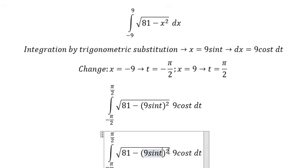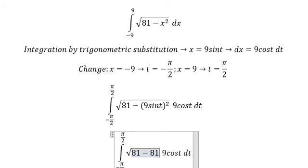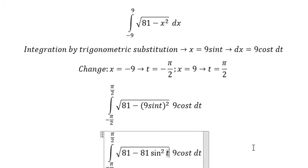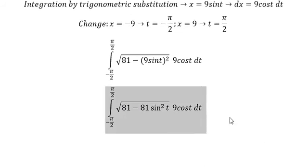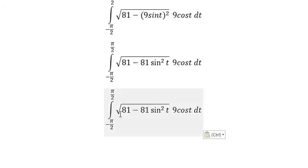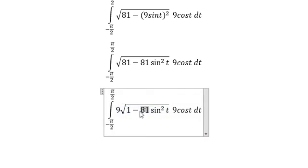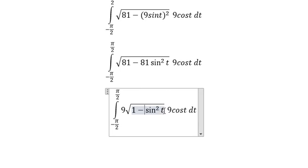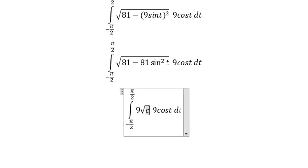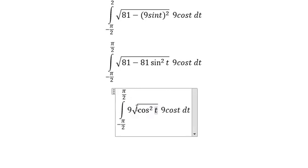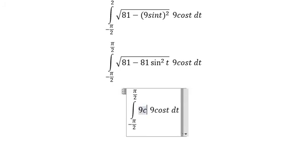This becomes 81 sine t squared. The square root of 81 is 9. We change this to cosine t squared. The square root of cosine t squared is cosine t.